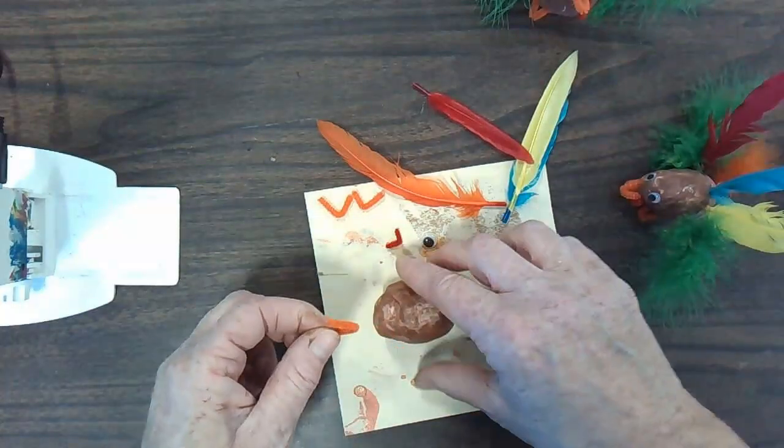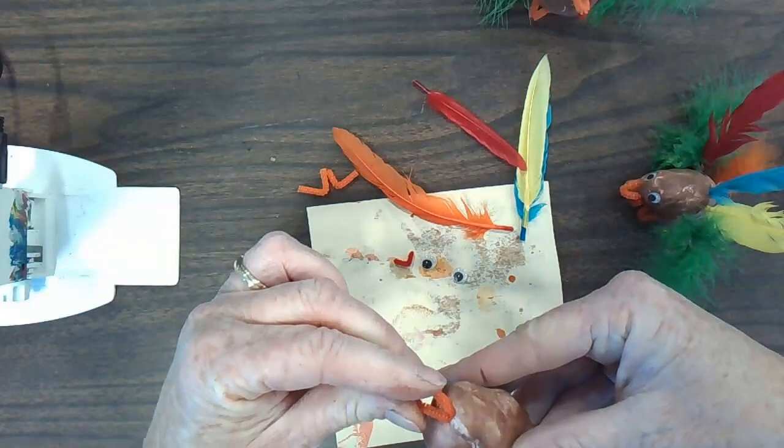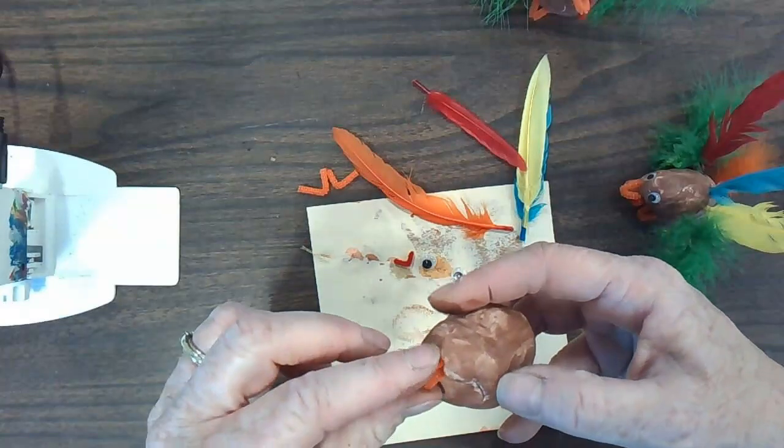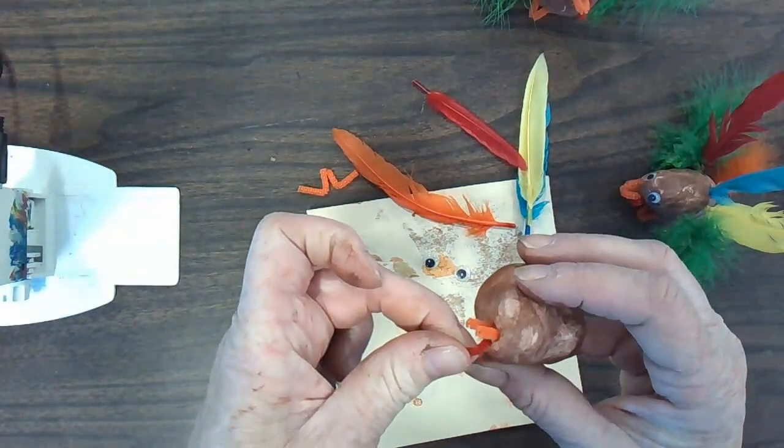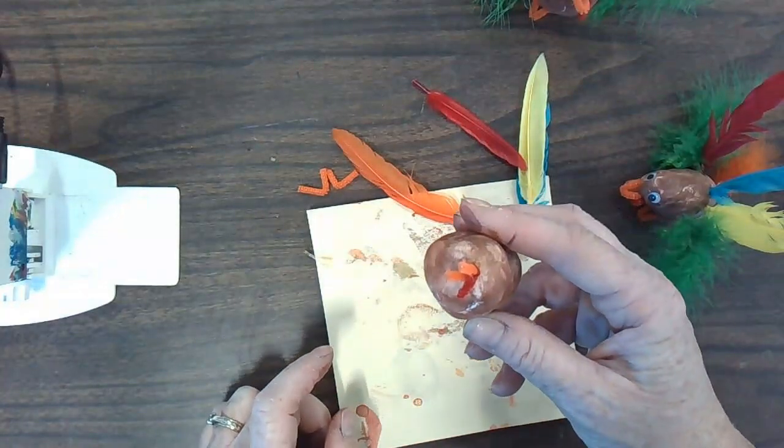Or you might want to turn it the other way, so your beak is out like this. It's up to you, but you do need to push in your beak far enough that it stays. You could add a little waddle, that red waddle. You need to push it in with your thumb or your finger so it stays right there.